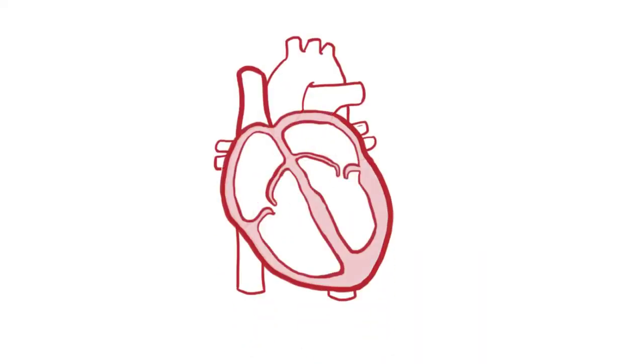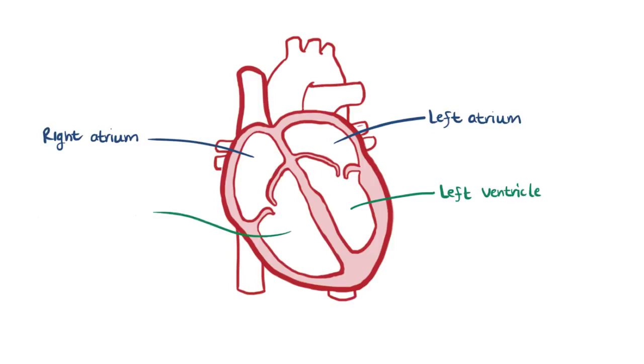The heart has four chambers. Two upper chambers, the left and the right atrium, or together the atria, and two lower chambers, the left and the right ventricles.